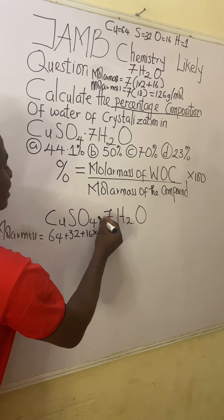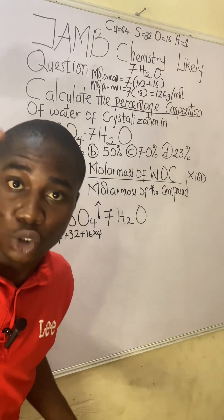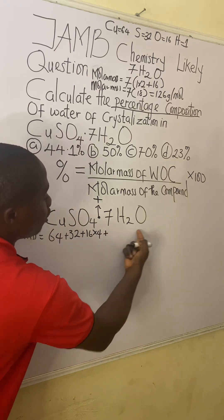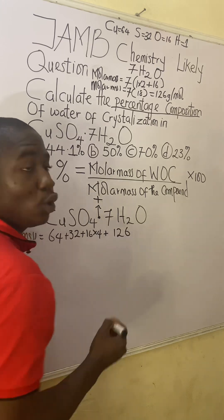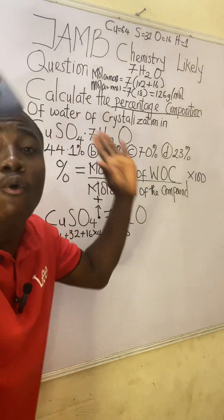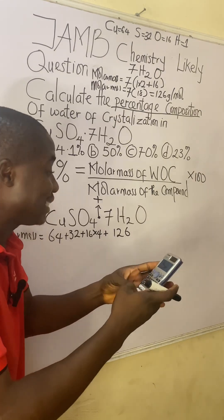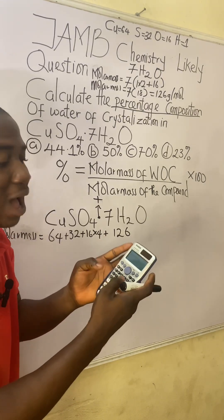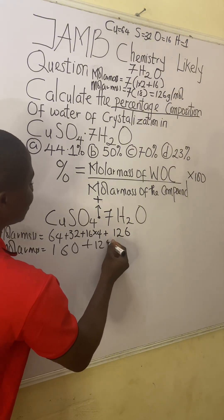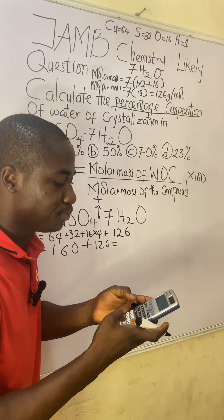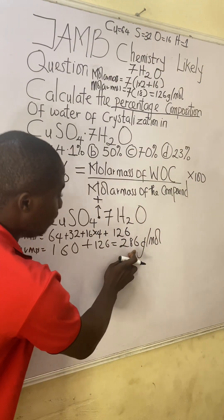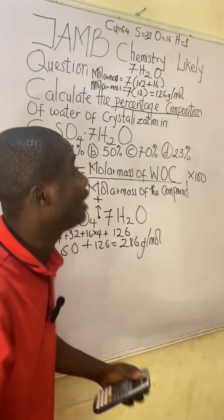Note that the dot symbol means addition, so it's plus the molar mass of 7H₂O which we already calculated as 126. Therefore: 64 + 32 + (16 × 4) + 126 = 160 + 126 = 286 g/mol. The molar mass of the full compound is 286 g/mol, which is larger than the molar mass of just the water of crystallization.